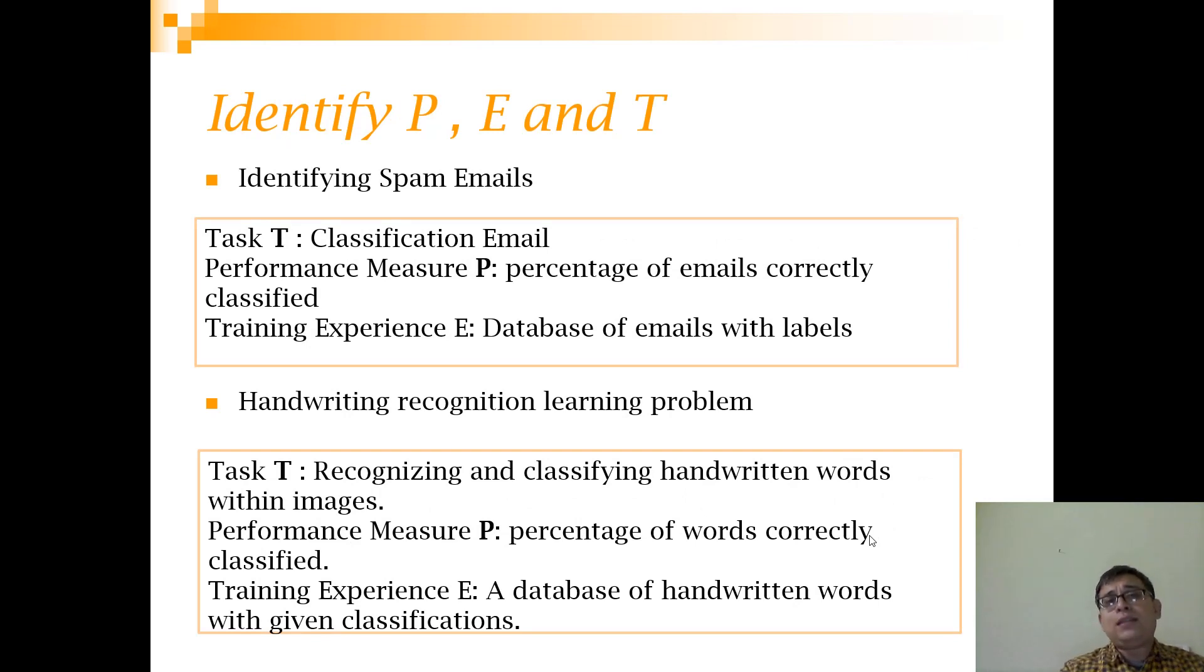If you look at the task of identifying spam emails, the task T is classification of emails. What is the performance measure? The performance measure P is percentage of emails correctly classified. And what is the training experience? This is one place where I have seen my students going wrong. The training experience E is that you have a database of emails with their labels. So there is an email and it is classified as normal, another email is classified as spam, another email classified as normal, like this.